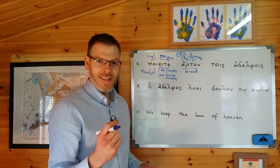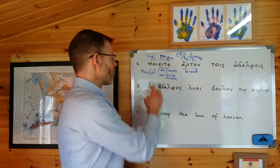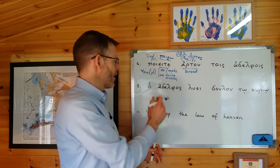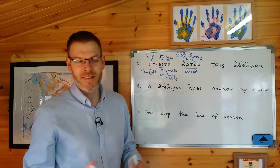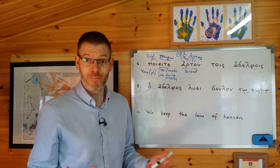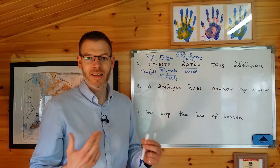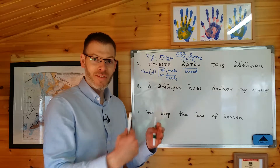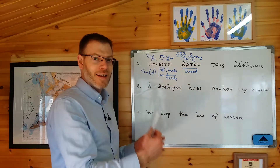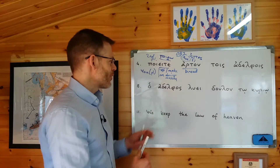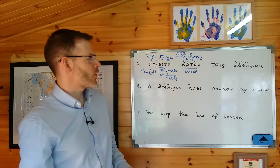So: you do or make or are doing or are making bread. Already what you can start to see is that because you've translated not just the verb but also its object, the translation of the object has constrained slightly the range of possible meanings that the verb can have. You don't normally talk about 'doing bread,' do you? You talk about 'making bread.' So verb done, subject done — now we do everything else. And what we've got here is tois adelfois. Take a look at that, see where it comes from — it comes, of course, from adelfos.